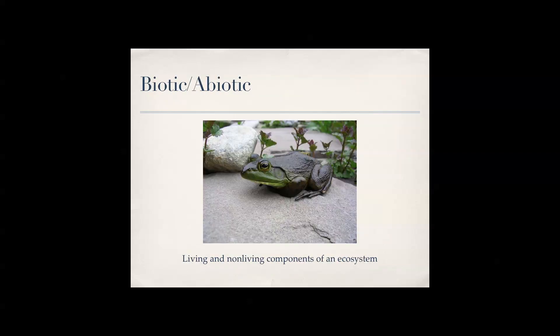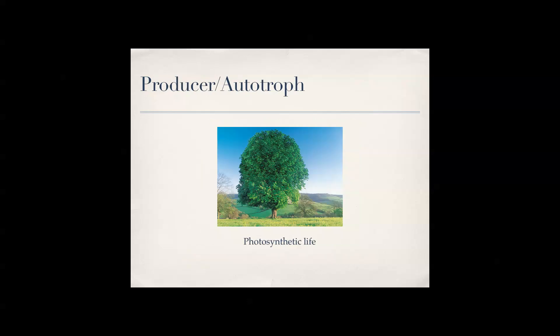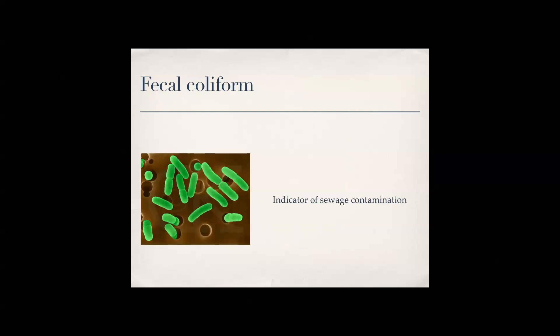Biotic means living — a frog is living, but a rock is not living; it's just minerals, so that's an abiotic component of an ecosystem. Producers are photosynthetic life — they use photosynthesis to live, so when you go outside, all those plants you see are photosynthetic life.